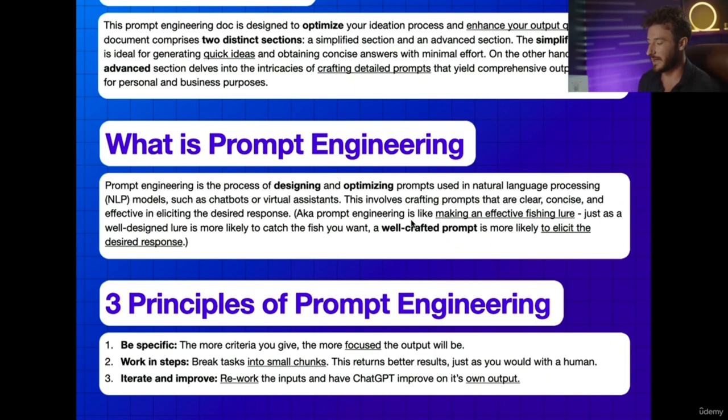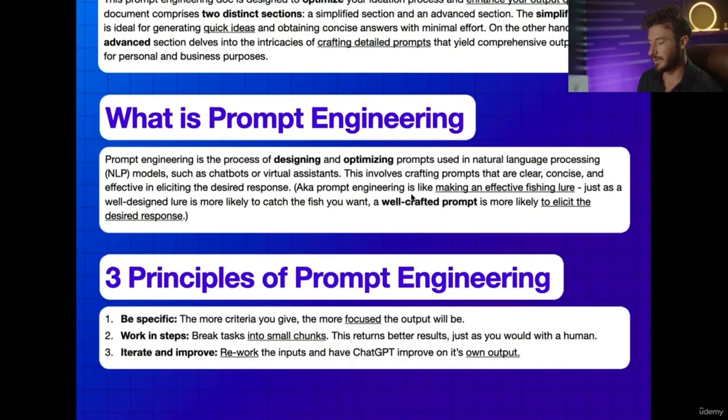The three primary principles of prompt engineering: first, be specific — the more criteria you give, the more focused the output. Second, work in steps and break up tasks into smaller chunks, just as you would with a human. Don't ask ChatGPT to write an entire book — start with the table of contents, go into chapters, then content of each chapter, and further into the details. This makes a better output. Third, iterate and improve — you can rework your inputs to have ChatGPT iteratively improve on its own output.